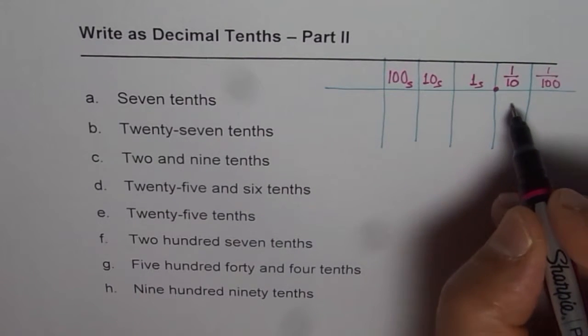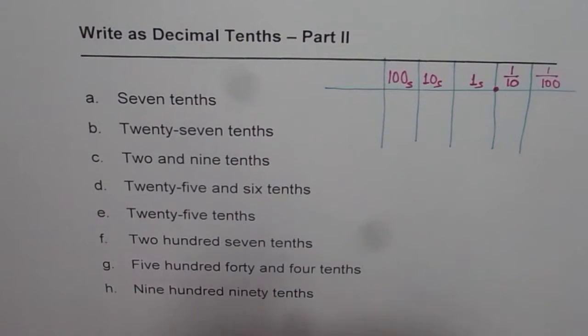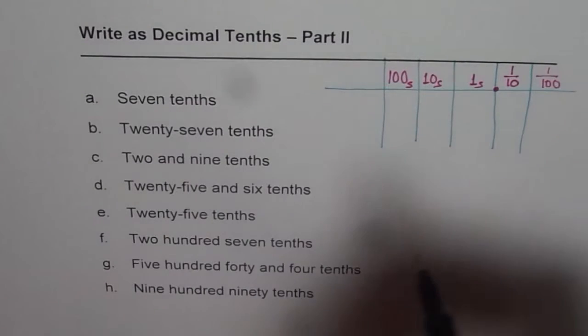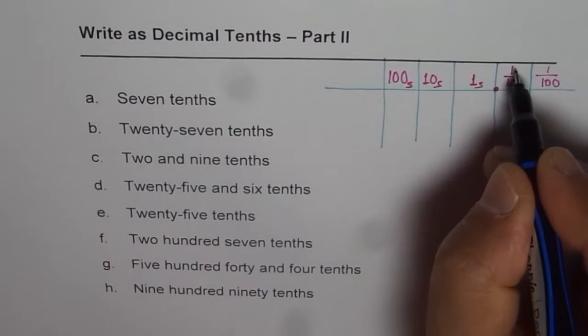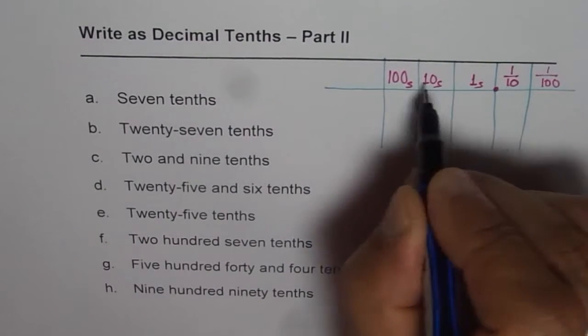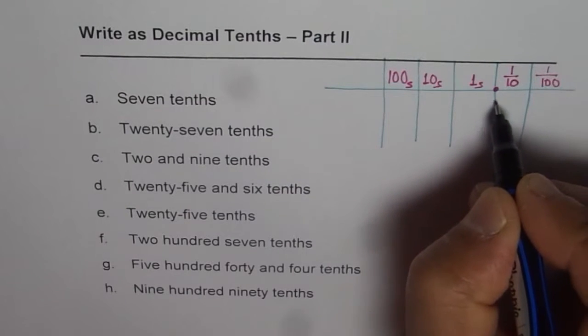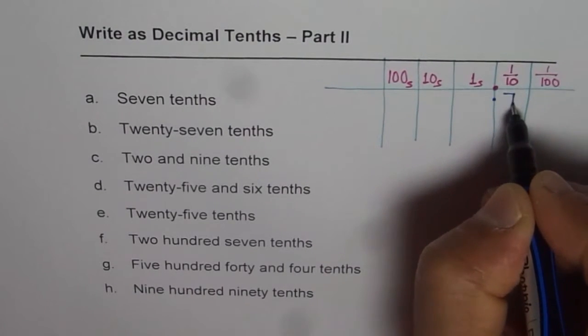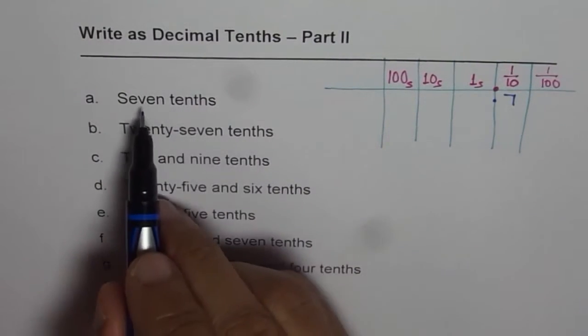If I write a number here it becomes tenths. For example, seven tenths. Seven tenths means that we have a number in the tenths place. That's the place value chart. So the number will be 0.7. That is the number which is seven tenths.